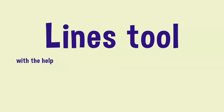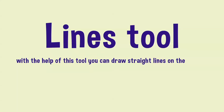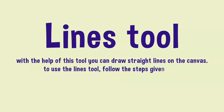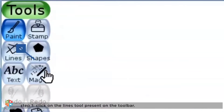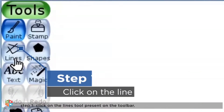With the help of the Lines Tool, you can draw straight lines on the canvas. To use the Lines Tool, follow the steps given below. Step 1: Click on the Lines Tool present on the toolbar.